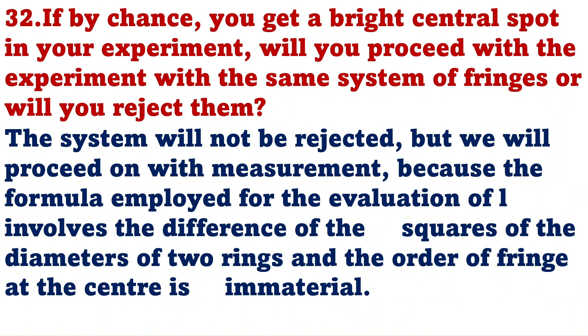If by chance you get a bright central spot in your experiment, will you proceed with the experiment or will you reject them? The system will not be rejected in this case, but we will proceed on with measurement, because the formula employed for the evaluation of ring involves the difference of the square of the diameter of two rings, and the order of fringes at the center is immaterial.